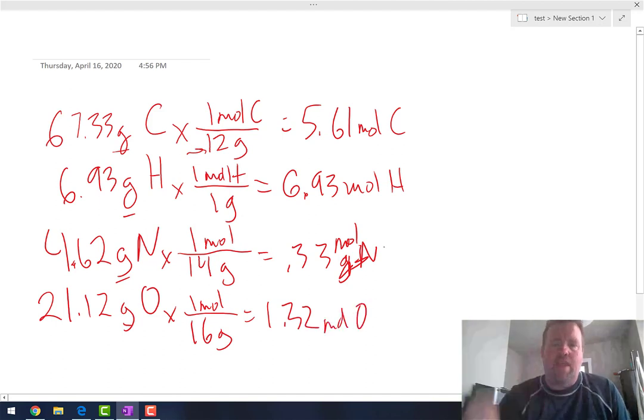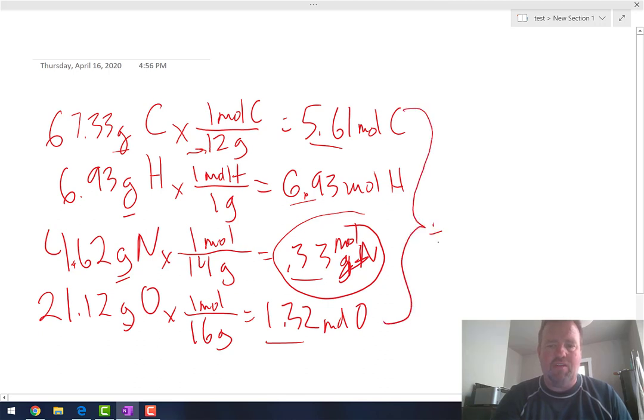So now that we have the moles, our next step is to divide. Look at our four numbers that we have here. And we look at whichever number is the smallest, which is this one. 0.33 is the smallest of those four numbers. So we're going to divide everything by 0.33.